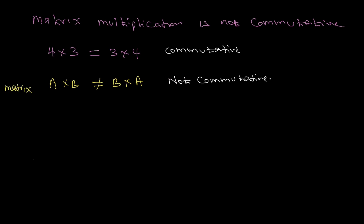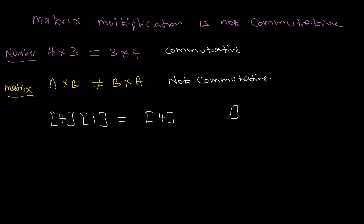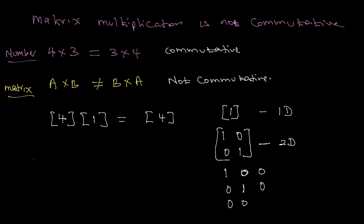For a single number like four, the identity is one, because four times one is still four. For a matrix, the identity matrix is the unit matrix. In one dimension, the identity is just one. In two dimensions, the identity matrix is [[1,0],[0,1]], which can be used to find area. In three dimensions, it is [[1,0,0],[0,1,0],[0,0,1]], which can be used to find volume.